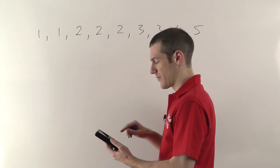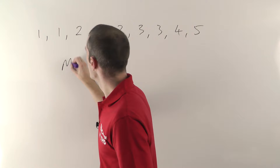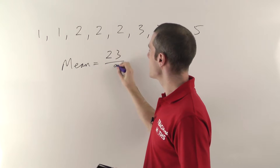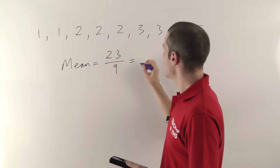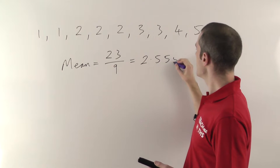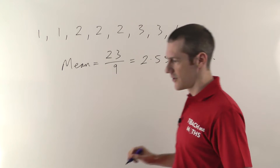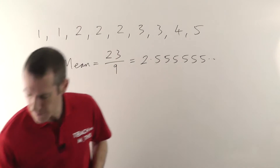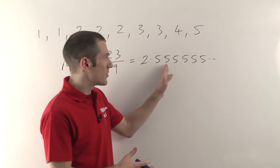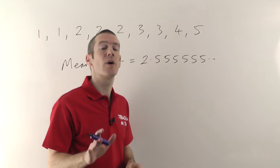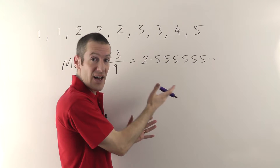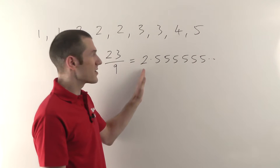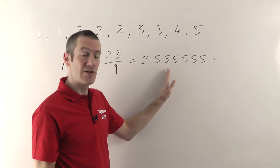That gives a decimal number — that's why you need the calculator. I get 2.555555... the fives just keep going on forever. You don't want to write out fives going on forever, you need to round it. Often the question will tell you — if it says round to one decimal place or two decimal places, follow what they say. Always check the question to see if it specifies.